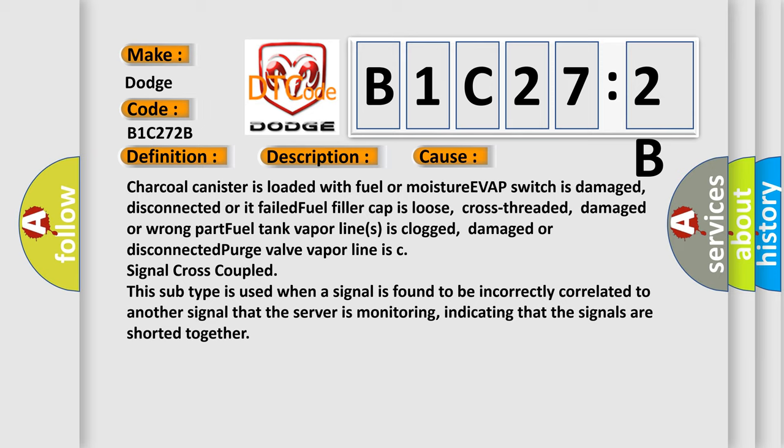Fuel tank vapor lines is clogged, damaged or disconnected. Purge valve vapor line is C. The key signal cross-coupled. This subtype is used when a signal is found to be incorrectly correlated to another signal that the server is monitoring, indicating that the signals are shorted together.